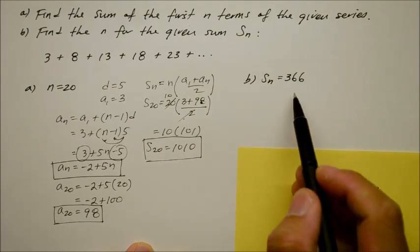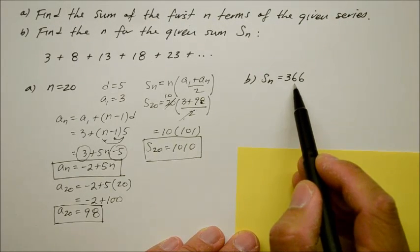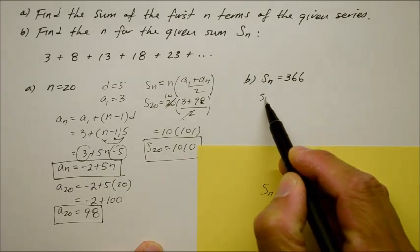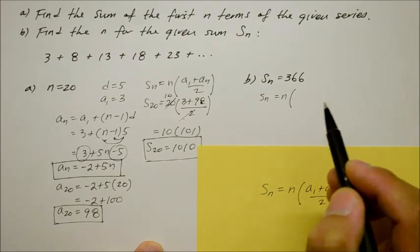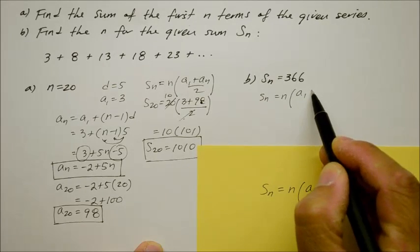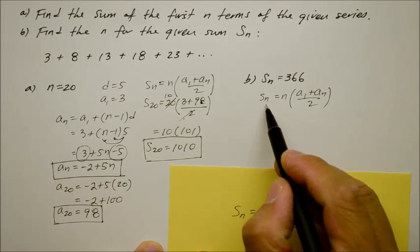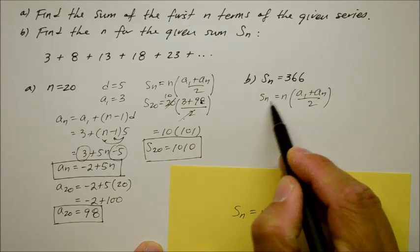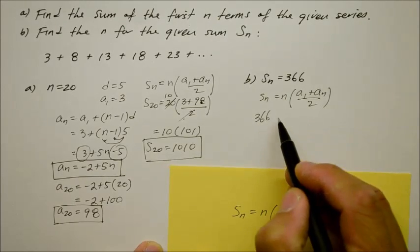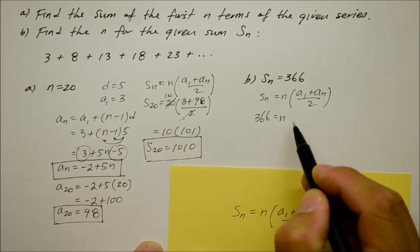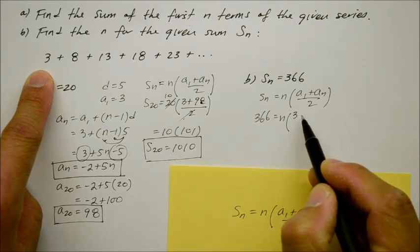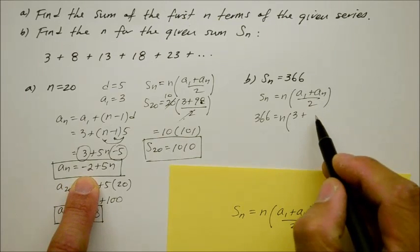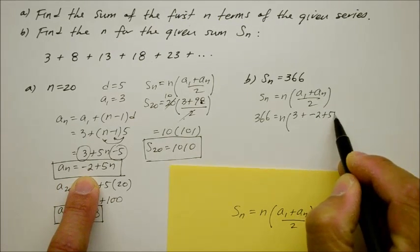Now the question is: at what position in the series will you get a total sum of 366? We use the standard form again. S of n equals n times the mean of a sub 1 plus a sub n divided by 2. S of n is given as 366. n is what we don't know — the position. a sub 1 is 3, and a sub n we know is the function negative 2 plus 5n, all over 2.